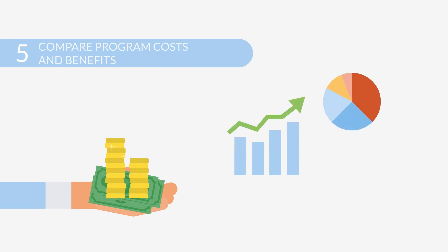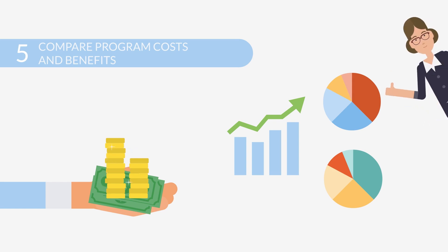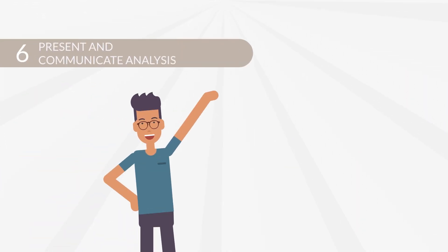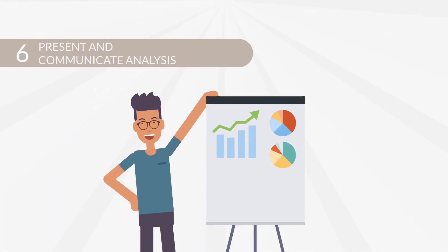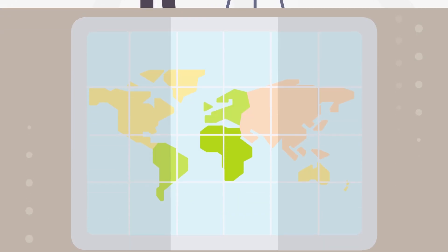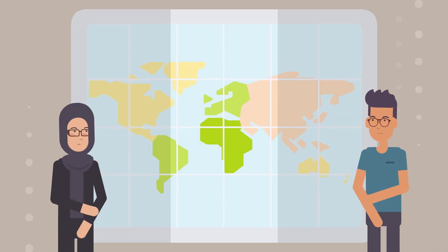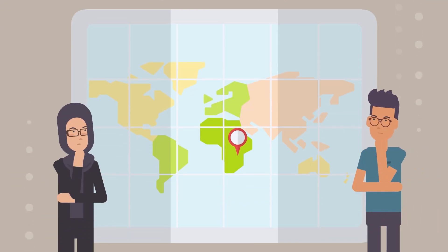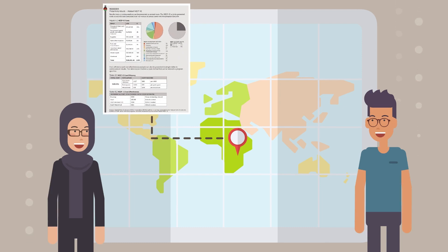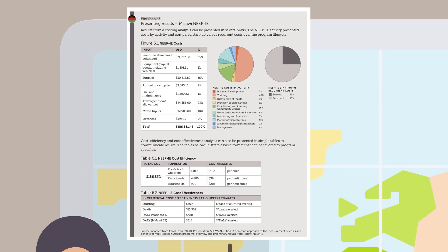The SEAMS Nutrition document provides guidance on using monitoring data to estimate total and average costs. Once the analysis is validated with stakeholders, the final step is to present and communicate the results in a transparent and standardized way to inform decision making. To support analysts, the document provides a real-world example of how the SEAMS Nutrition common approach was used to estimate costs and cost-effectiveness for a complex multisectoral intervention that improved nutrition status.